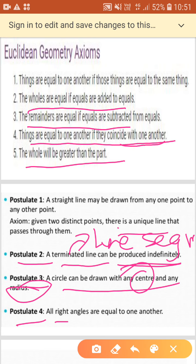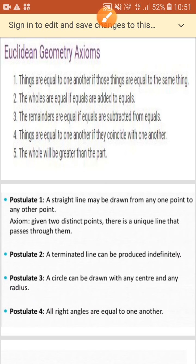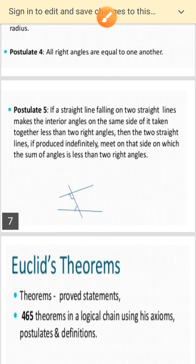And postulate four states that all right angles are equal to one another. Right angles means they all have measure of 90 degree. Now moving on, this is very important, postulate five.